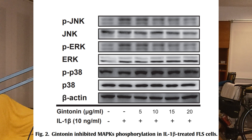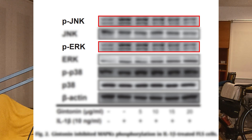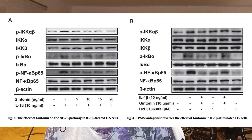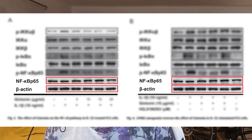There are a couple of problems with the western blots in this paper. These images of bands in figure 2 should be unique, but they're not. They've been duplicated, which means that at least one of them is labelled wrong. And there's a similar problem with figure 3 and 4.